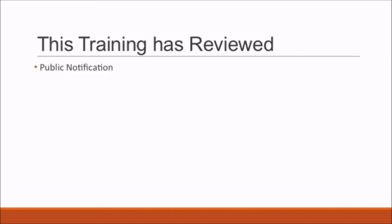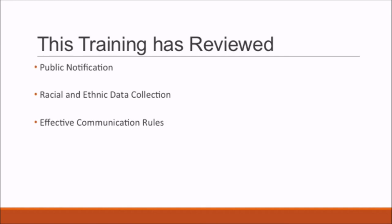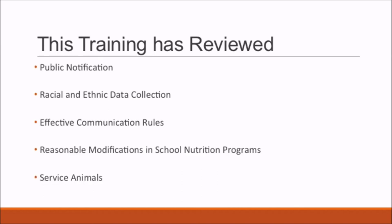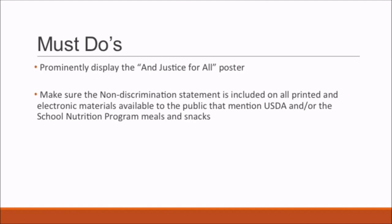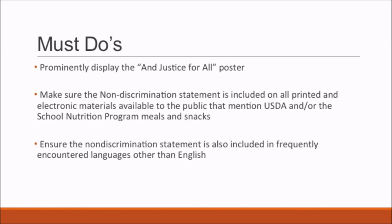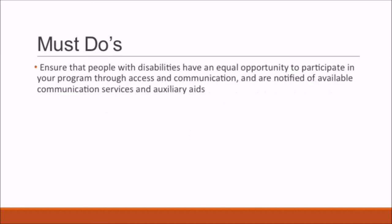In summary, this training has reviewed public notification, racial and ethnic data collection, effective communication rules, reasonable modifications in school nutrition programs, and service animals. Key must-do's include: prominently display the And Justice for All poster; ensure the non-discrimination statement is on all printed and electronic materials mentioning USDA or the school nutrition program; include the statement in frequently encountered languages other than English; collect annual racial and ethnic data; ensure people with disabilities have equal opportunity through access and communication; and notify participants of available communication services and auxiliary aids.